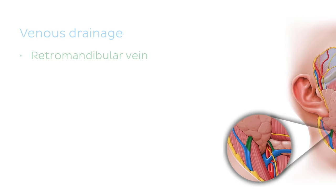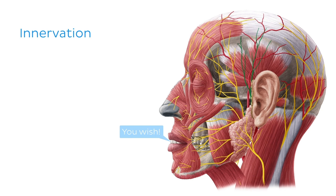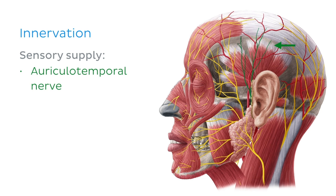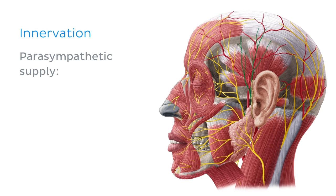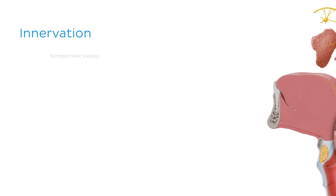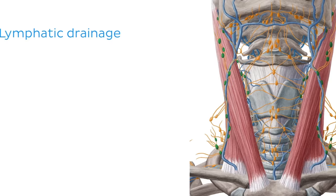You may have thought that the parotid gland would be innervated by the facial nerve, but the parotid gland actually receives both sensory and autonomic innervation. It receives its sensory supply from the auriculotemporal nerve and the greater auricular nerve. The parasympathetic supply, which stimulates saliva production, comes from the glossopharyngeal nerve via the auriculotemporal nerve, and it receives the sympathetic supply from the superior cervical ganglion. Lymph from the parotid gland drains to the superior deep cervical nodes.